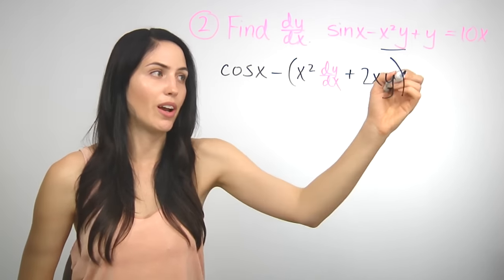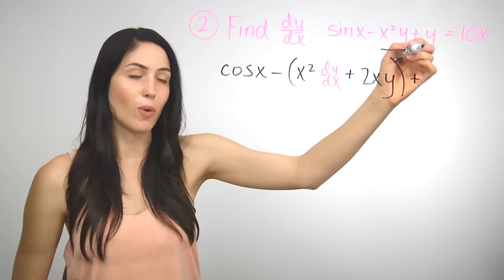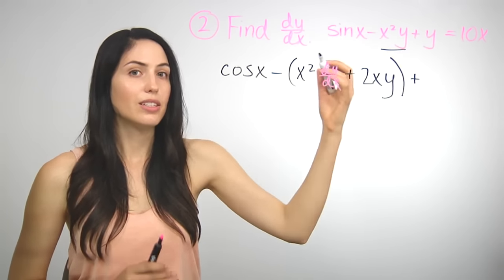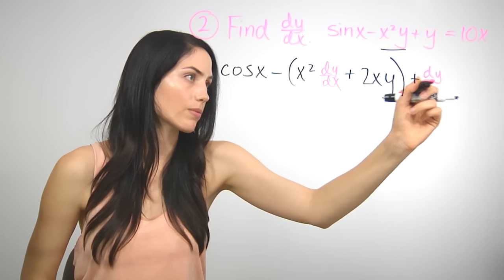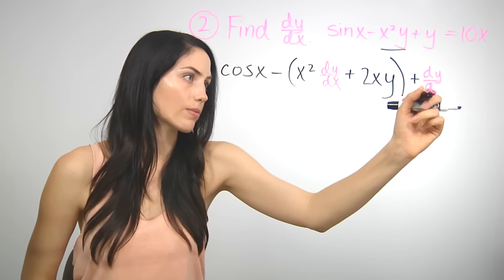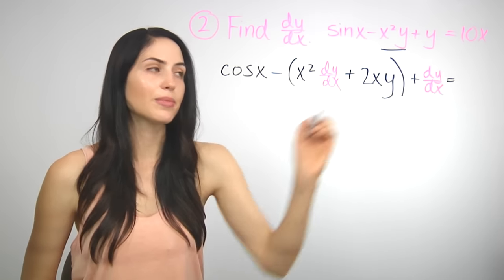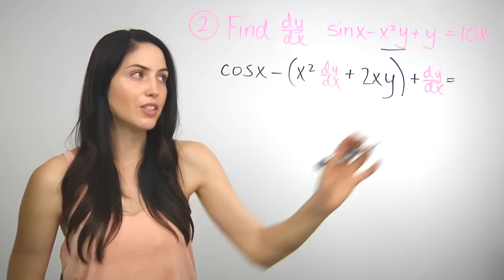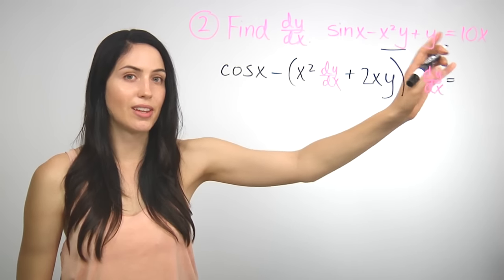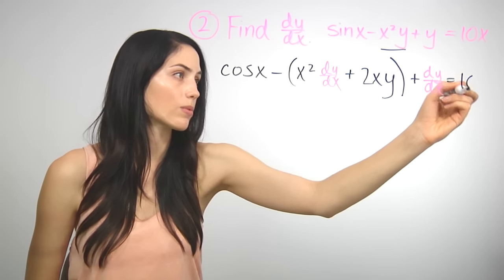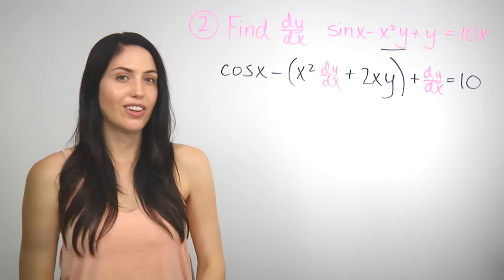Move on to the next term: we're adding the derivative of y, which is dy/dx. And that equals the derivative of the right-hand side — the derivative of 10x with respect to x is just 10. Okay, and you're done with the first step.